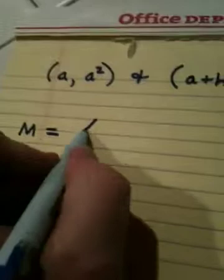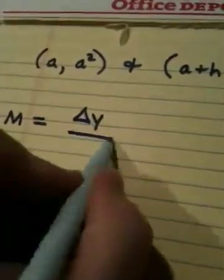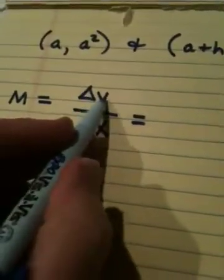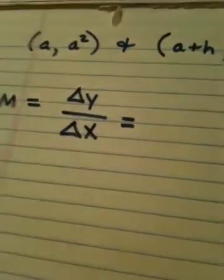Slope is always change in y divided by the change in x. Slope is always a fraction. The change in y goes on the top, the change in x goes on the bottom.